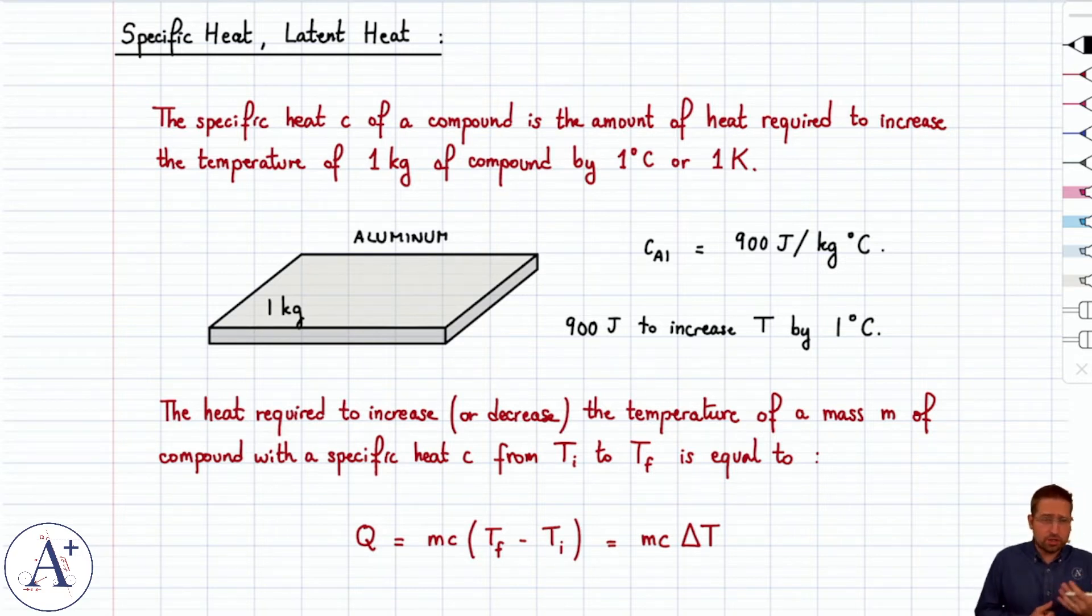It's specific to the compound. Each compound has its own specific heat, and it tells you how much energy you would have to supply to take one kilogram of that compound and increase its temperature by one degree Celsius, as long as there is no phase change. So if it starts to melt, then this doesn't work anymore.